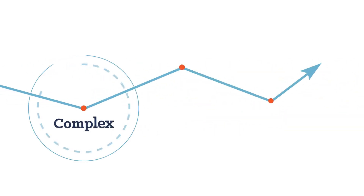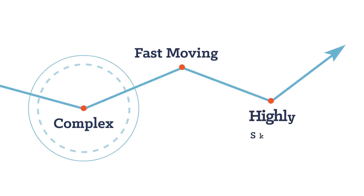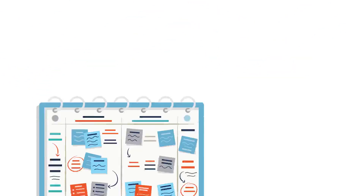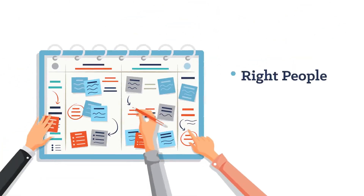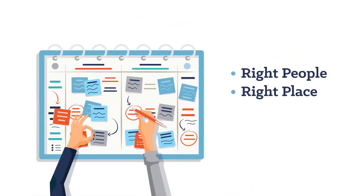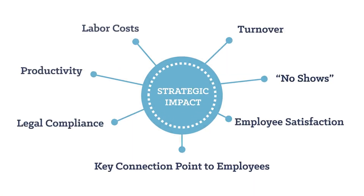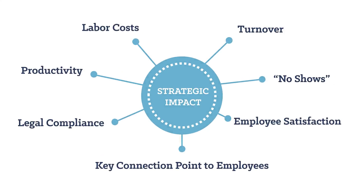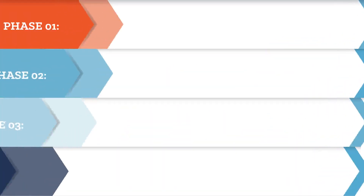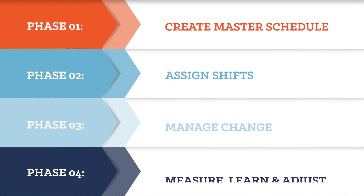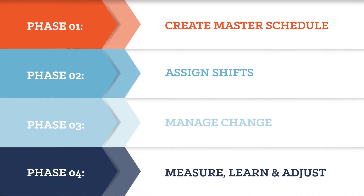This is a modern, shift-based workplace. Now, more than ever, creating an effective and strategic employee schedule is critical. It ensures that the right people are in the right place at the right time. A strategic approach improves efficiency in many areas of workforce operations. This video breaks the employee scheduling process down into four key phases that apply to most work environments.